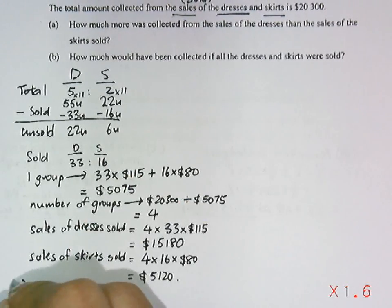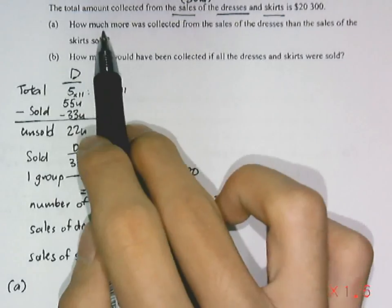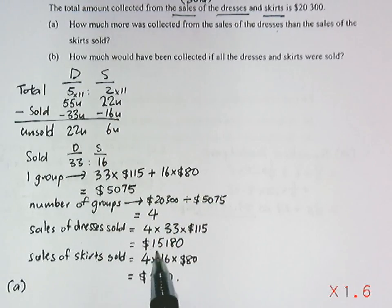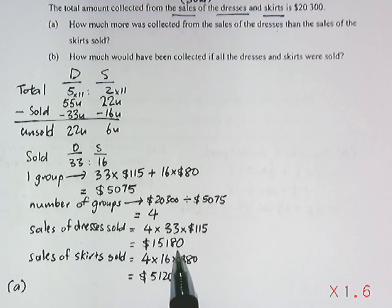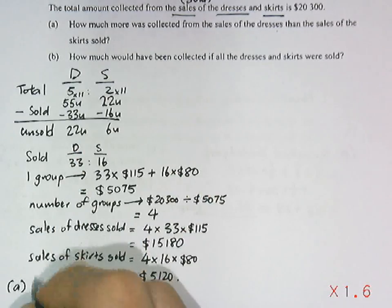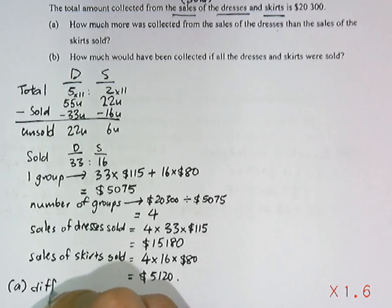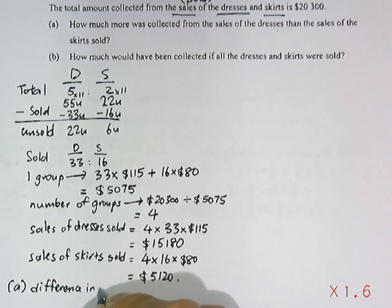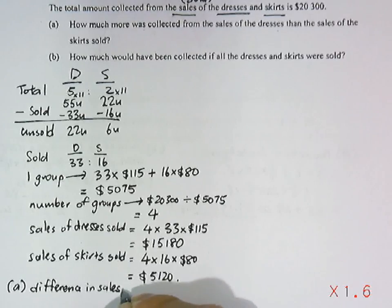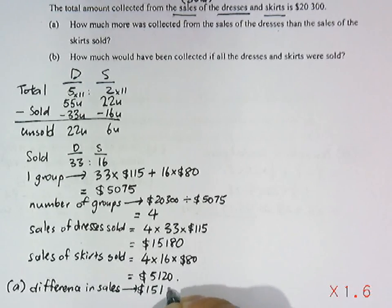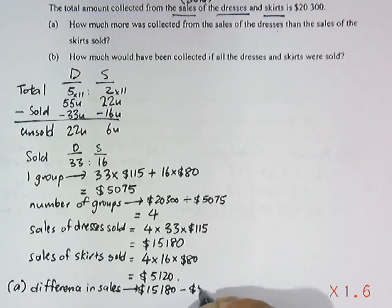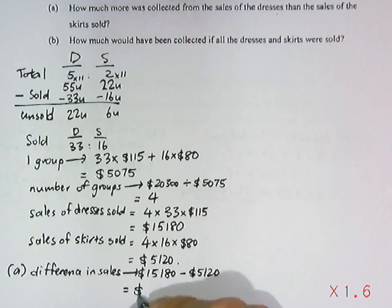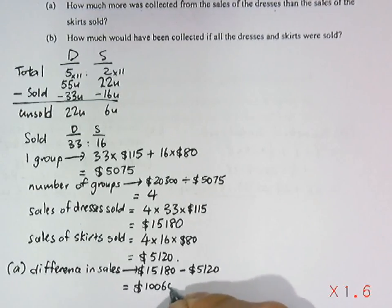Part A asks how much more was collected from sales of the dresses than the skirts. The sales of dresses sold is fifteen thousand one hundred and eighty dollars, and the skirts is five thousand one hundred and twenty dollars. The required difference is fifteen thousand one hundred and eighty minus five thousand one hundred and twenty, giving an answer of ten thousand and sixty dollars.